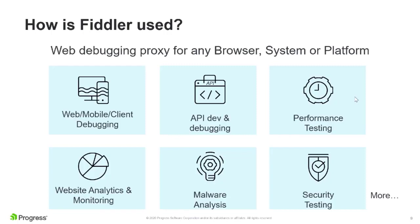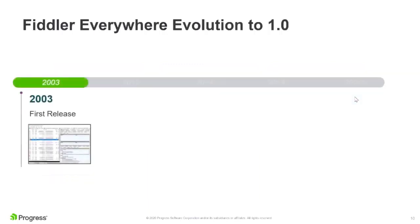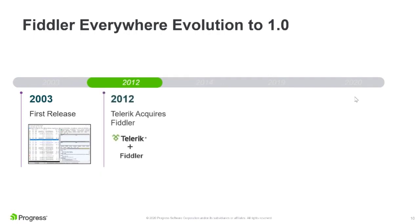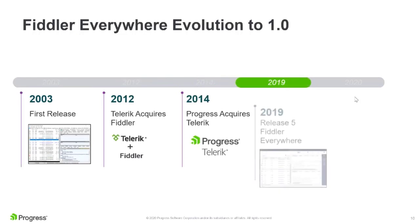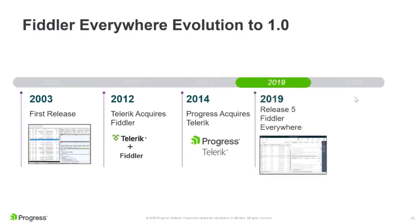Now let's see how Fiddler has evolved over time. Fiddler has been the de facto web proxy tool for more than a decade. The first version was released sometime around 2003, and Eric Lawrence built a great tool and a great community around it. Telerik acquired Fiddler in 2012, then Progress acquired Telerik in 2014. The Fiddler team released the first version of Fiddler Everywhere around early 2019, and we've been working on improving it ever since, recently releasing the 1.0 version publicly.